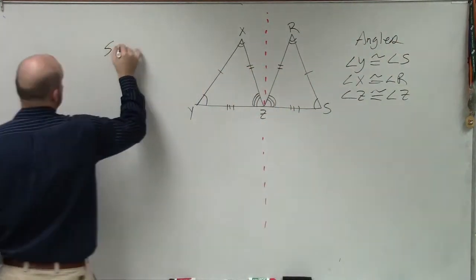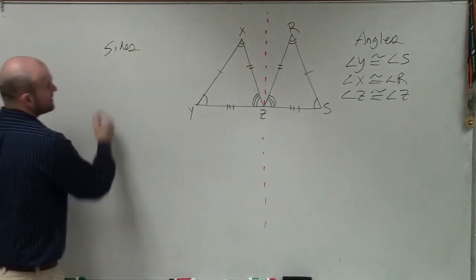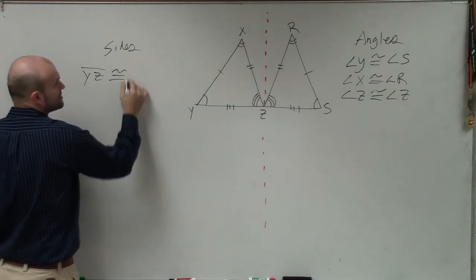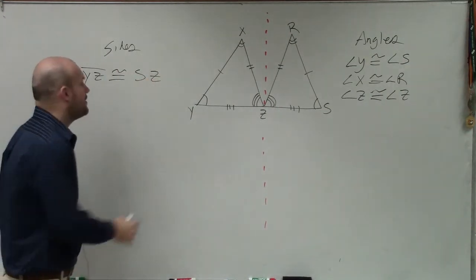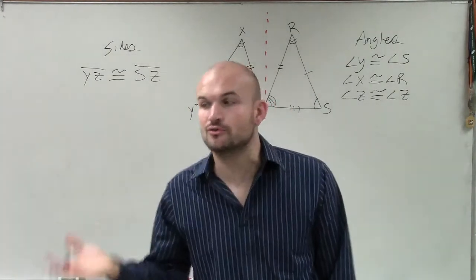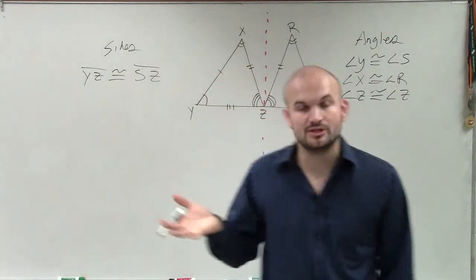and then when we're looking at what sides are congruent, I can say that yz is congruent to sz. Notice how I go in the same direction. You have to make sure you follow congruent parts when labeling your sides.